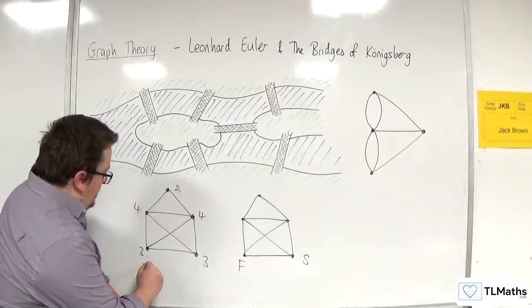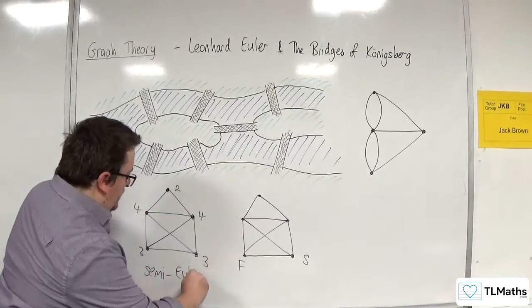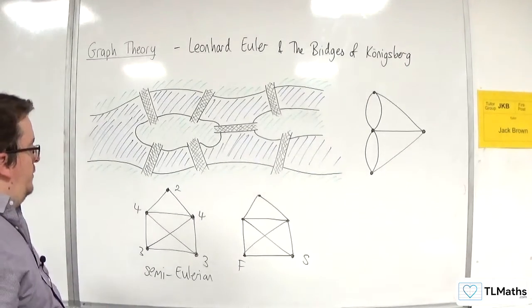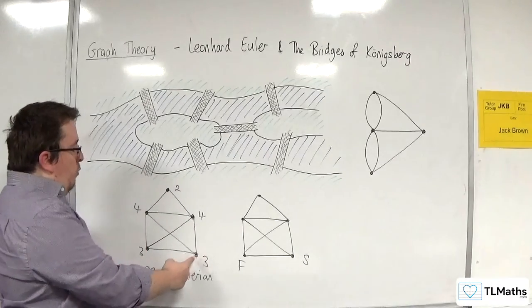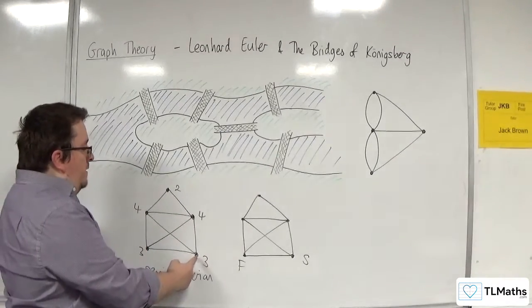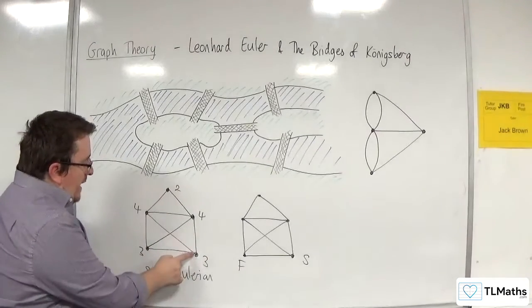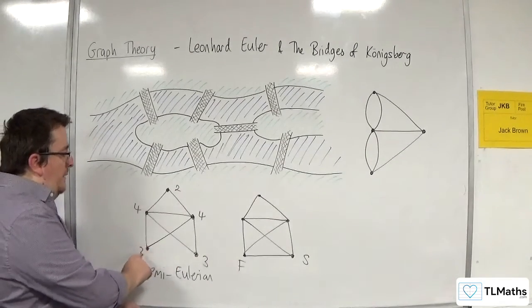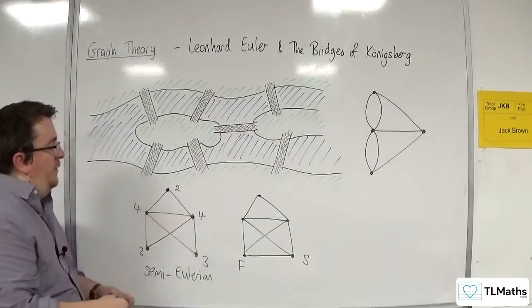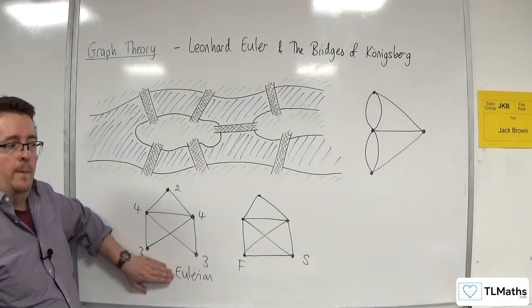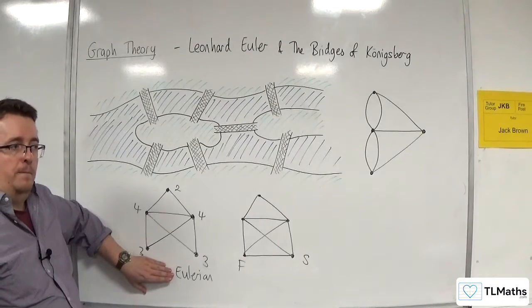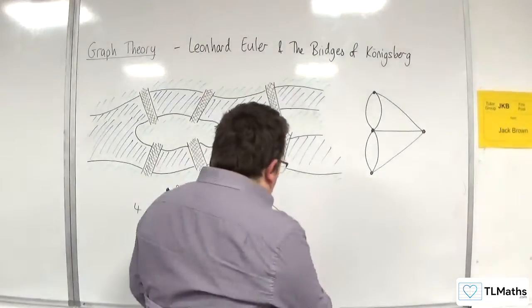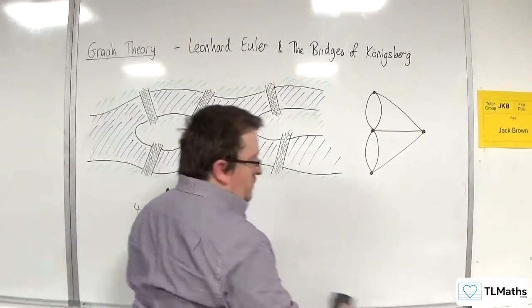And this graph is referred to as semi-Eulerian because it has precisely two odd vertices. Essentially what it allows you to do is it allows you to escape from one. And then you've dealt with that one edge. And what then happens is it turns it into a graph that now has 22442 and turns it into what's referred to as an Eulerian graph. So an Eulerian graph has all even order. All vertices have even order. And once you have an Eulerian graph, you can start at any vertex and draw your Eulerian graph.